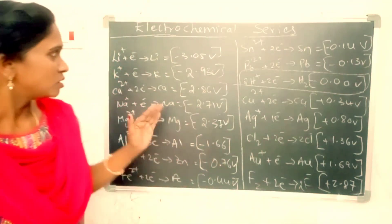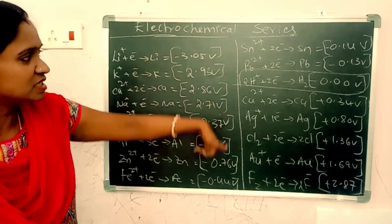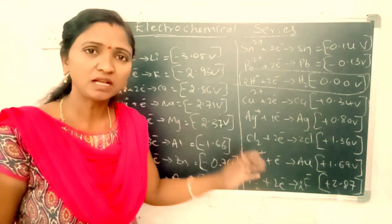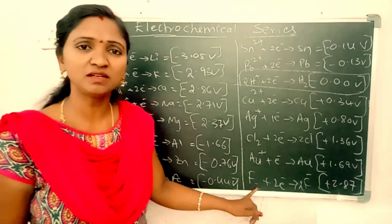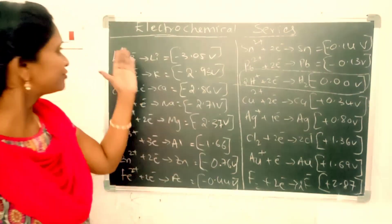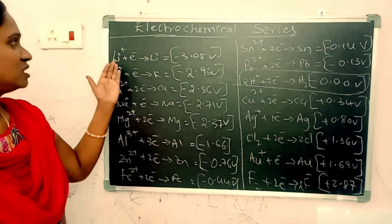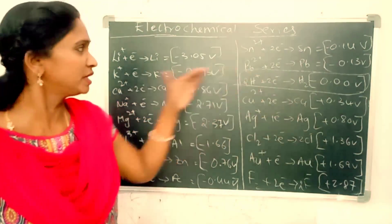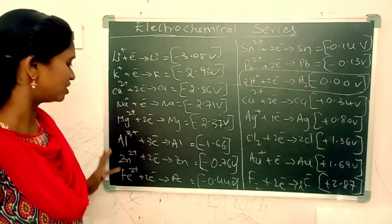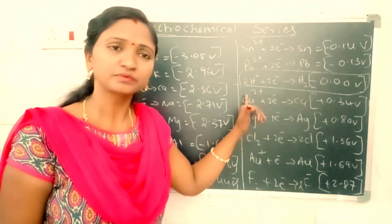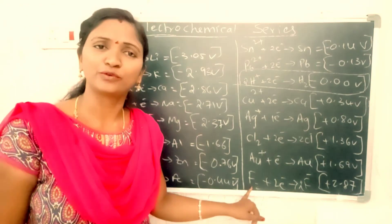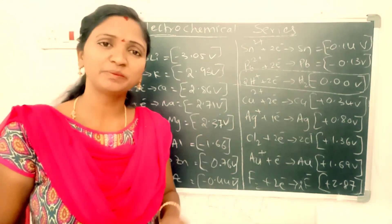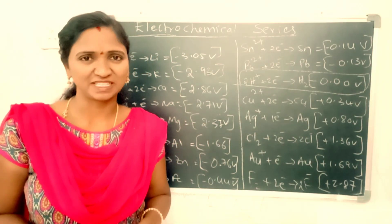So this is the increasing order. The reactivity increases from lithium to fluorine. The reducing ability decreases from lithium to fluorine. The oxidizing ability increases from lithium to fluorine. The corrosion property increases from lithium to fluorine. So this is the electrochemical series and its significance. I hope you understand, thank you.